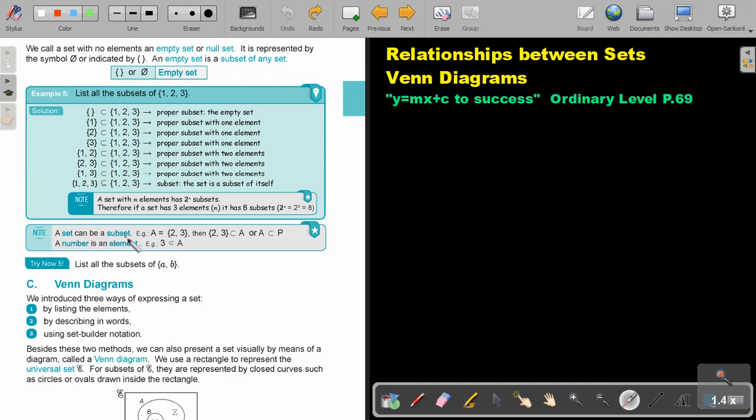Note a set can be a subset. For example, {2, 3}. Then {2, 3} is the element of A, or A is in the P. The number of elements, a number is an element. So then 3 is the element of A. So basically what I'm trying to say to you, if you write subsets, put the curly brackets around. Otherwise, you will say 3 is an element of A. Then you don't put curly brackets.